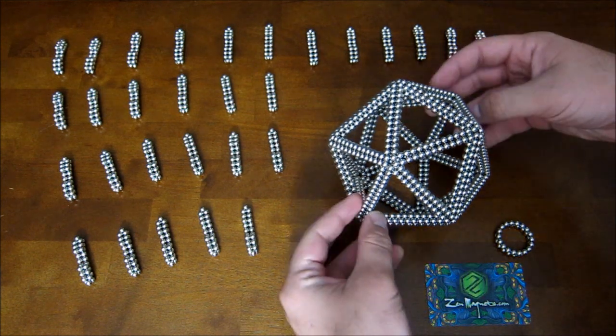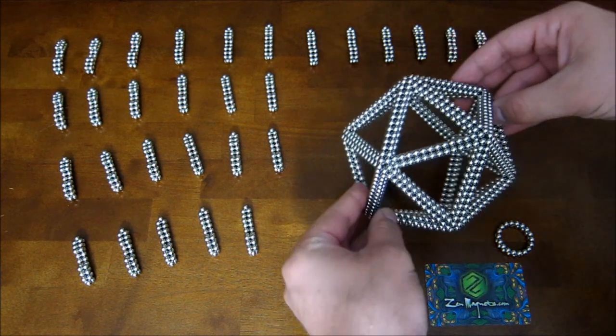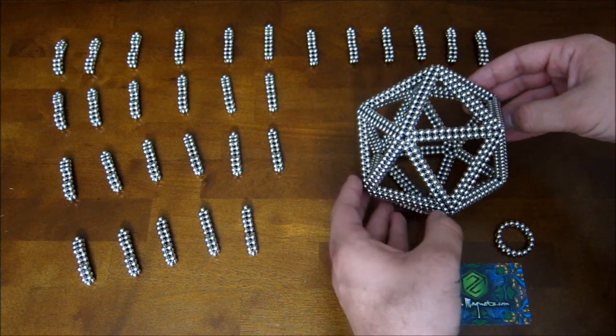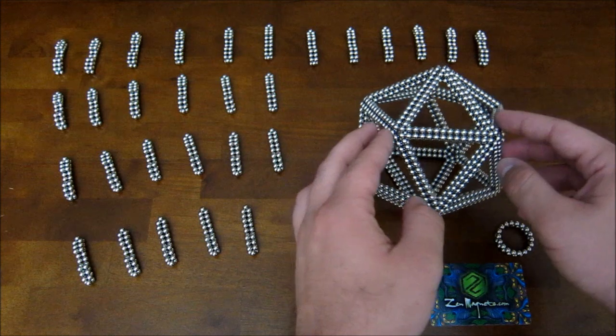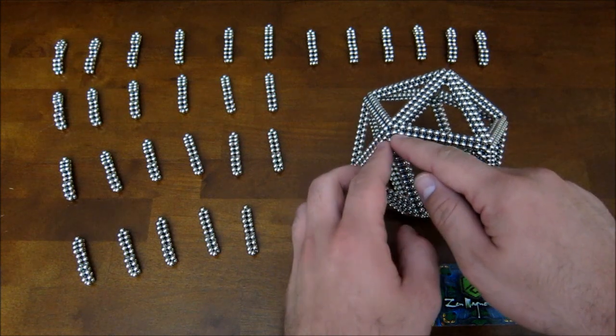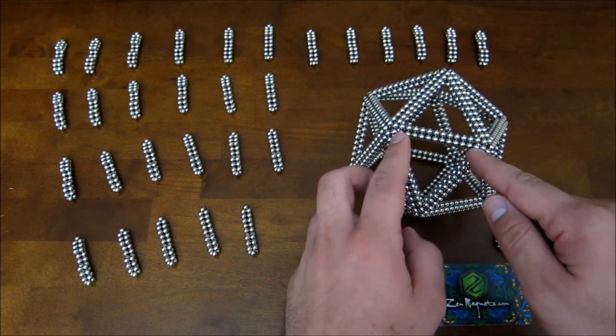The first thing you need is an icosahedron frame, and I have a video tutorial, so I'll post a link for that. The only difference between this one and the one in the tutorial is that this one has an edge length of 12 rather than 13.